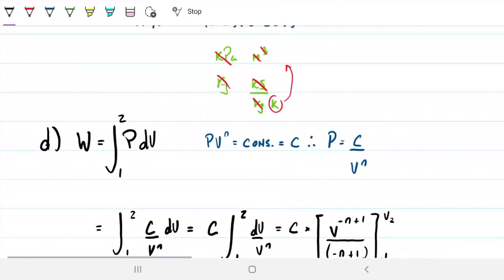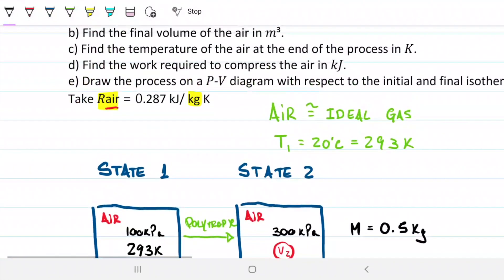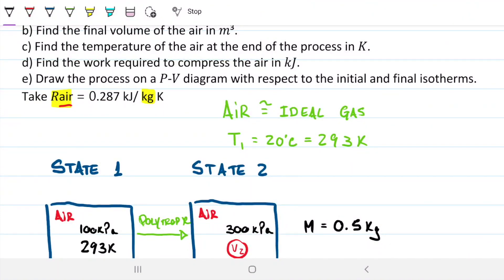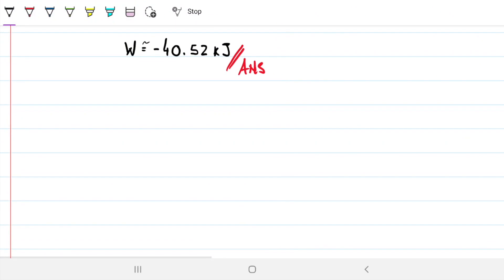Last part, part E. Part E asks us to draw the PV diagram with respect to initial and final isotherms. Fair enough. So part E: we have pressure in kPa and volume in m³. We're going to need two isotherms - the first one for 293 K and one for 377 K that we found. So let's say this is the 293 K isotherm, this is the 377 K isotherm.